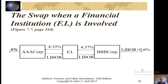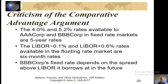What about if a financial institution is involved? Banks don't do things for free, so they're going to take a little bit of a cut of any swap agreement they negotiate. In this example between AAA and BBB, they're passing through LIBOR, but the fixed rate of 4.37% coming from BBB only goes out to AAA at 4.33%, so the financial institution gets the difference of 0.04%.